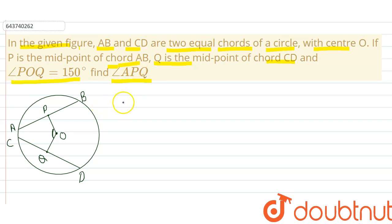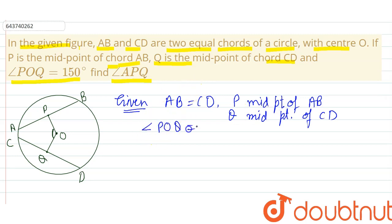So, here in the question, first let's write all the given things. Here AB is equals to CD. Chords are given equal. Okay, P midpoint of AB and Q is given midpoint of CD. These two midpoints are given. Also, angle POQ, it is given us as 150 degrees. This angle POQ, this one is 150 degrees. And we need to find angle APQ.